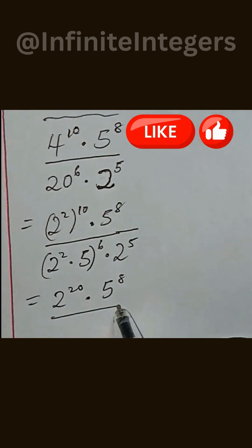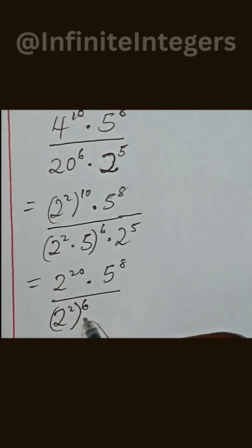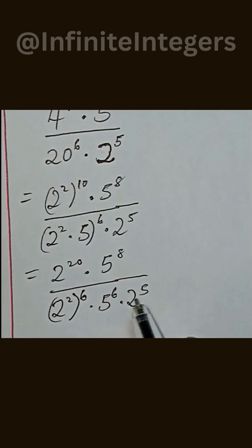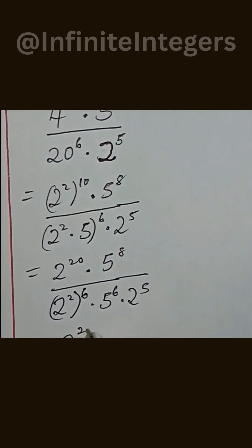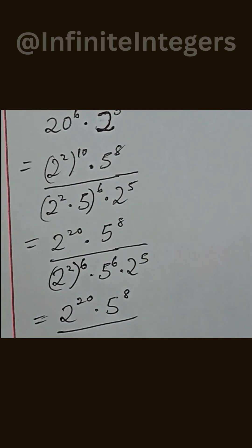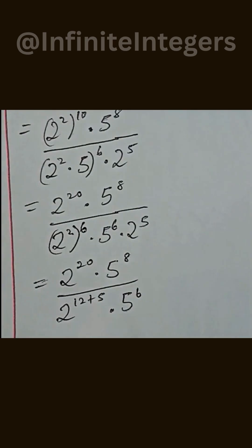And this is written as over 2 to the power of 2 to the power of 6. If we multiply, we also have 5 to the power of 6 multiply by 2 to the power of 5. So we match these together for the same base, and that is written as 2 to the power of 20 multiply by 5 to the power of 8, over 2 to the power of 12 plus 5, multiply by 5 to the power of 6.